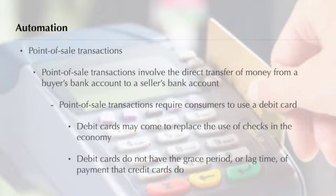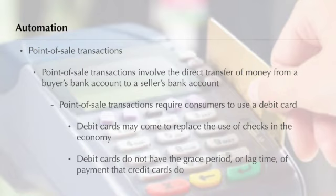Have you seen someone pay for gasoline or groceries by running a plastic card through an electronic scanner? Customers are able to purchase items at gas stations, grocery stores, and convenience stores that have point-of-sale terminals. A point-of-sale transaction involves a direct transfer of money from a buyer's bank account to a seller's bank account. The buyer pays by inserting a debit card into a terminal. By mid-2019, more than 750,000 point-of-sale terminals were in use across the United States.